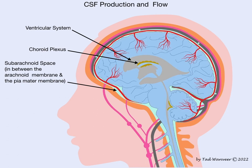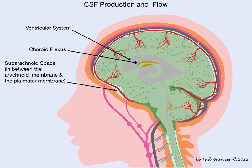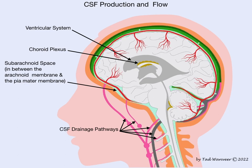CSF flows by way of the glymphatic system into spaces around cells, where it provides vital nutrients to the brain cells, and blends with interstitial fluid. Interstitial fluid flow then picks up waste or potentially toxic substances, and flows by various routes to drainage pathways back to systemic circulation.